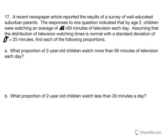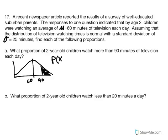Problem 17: A recent newspaper article reported results of a survey of well-educated suburban parents. Responses indicated that by age 2, children watch on average 60 minutes of television each day. Assuming the distribution of television watching is normal with a standard deviation of 25 minutes, find the proportion of children that watch more than 90 minutes per day. With the mean at 60, 90 minutes would be to the right, representing the area of interest in the tail.